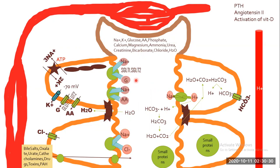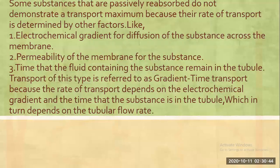In summary, this concept covers four key items: plasma load, tubular load, renal threshold, and tubular transport maximum. Sodium transport maximum is produced differently by sodium. Thank you very much.